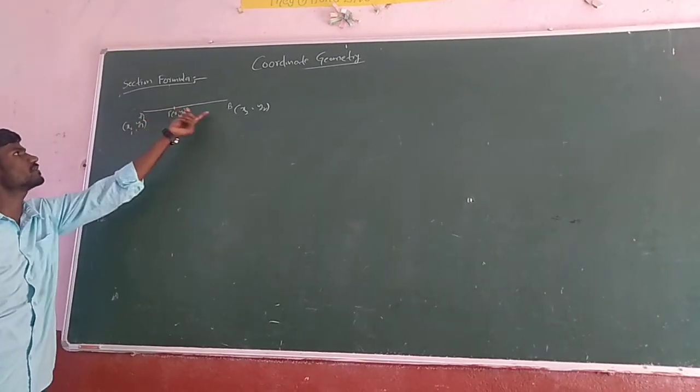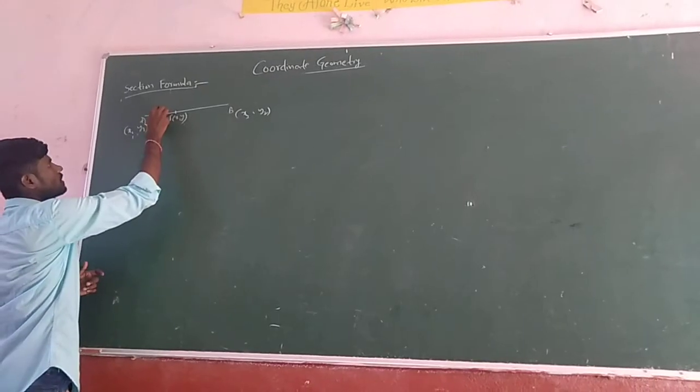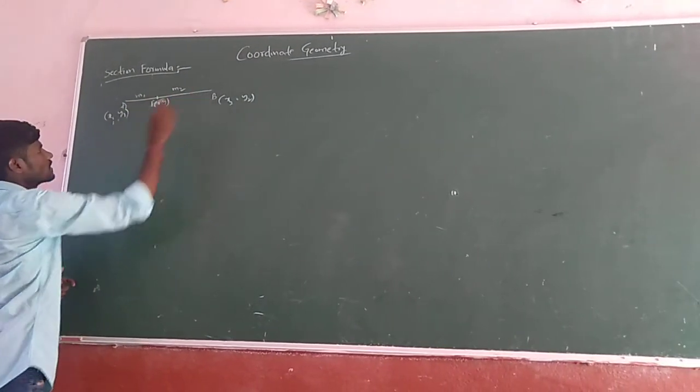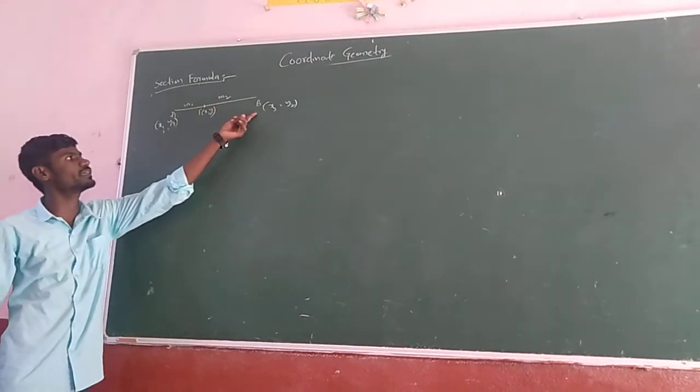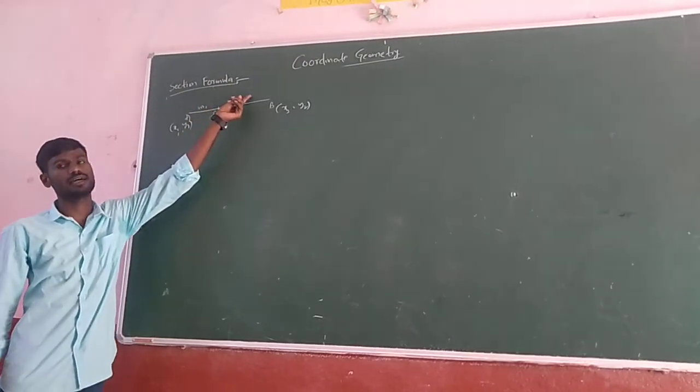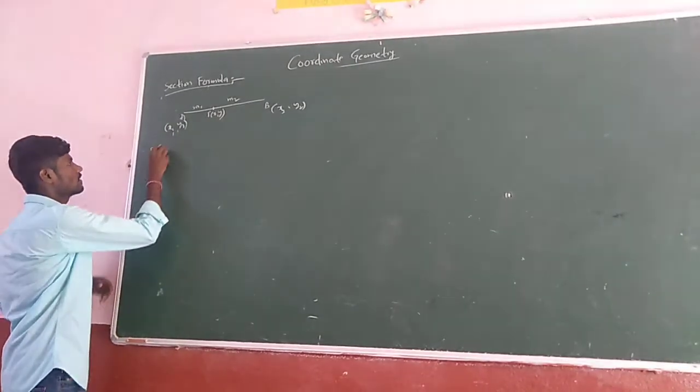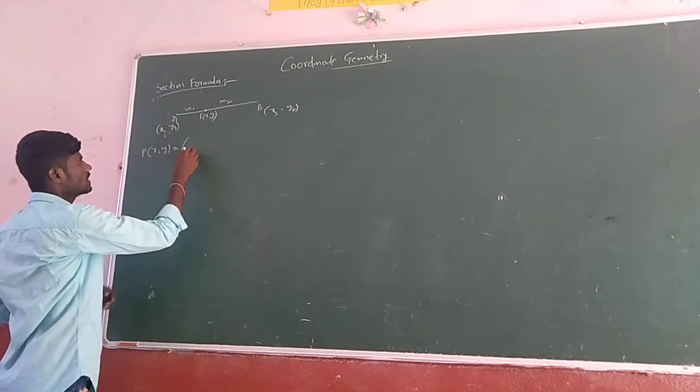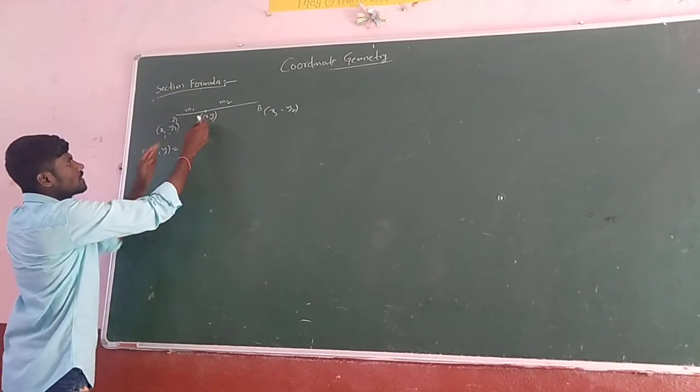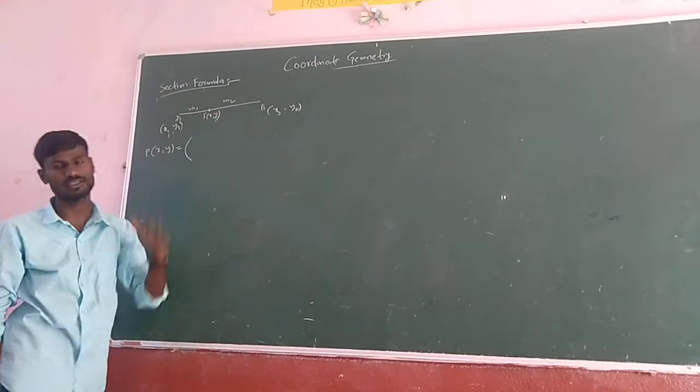And these two parts are different, these are non-equal parts. If we take from A to P in the ratio M1 and P to B in the ratio M2, the point P divides the line AB in the ratio M1 and M2. Here this point is internally, means this lies inside between A and B. If it lies outside, that is different.